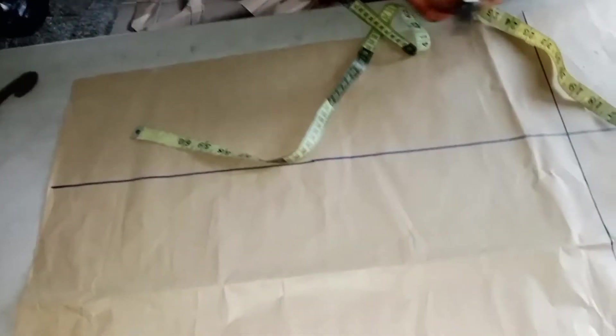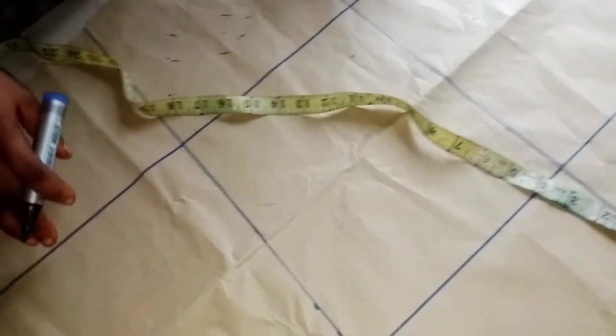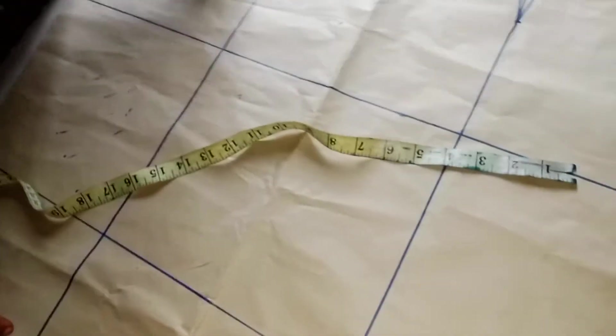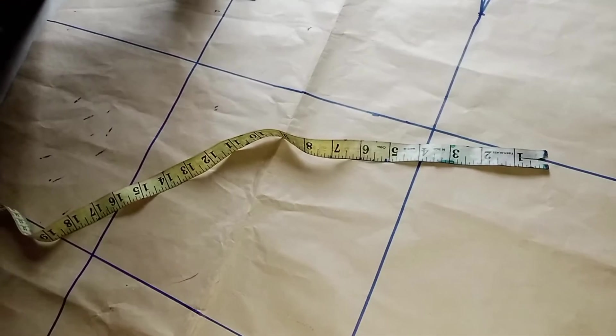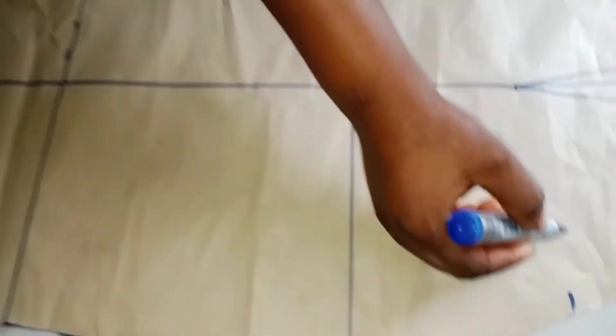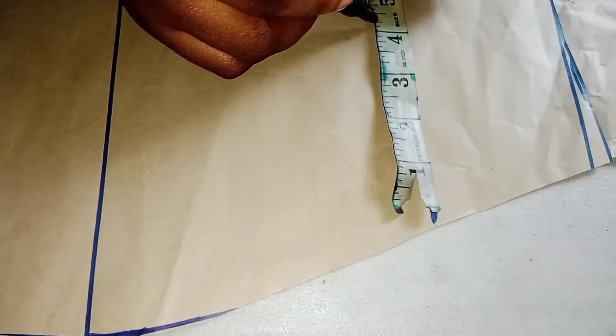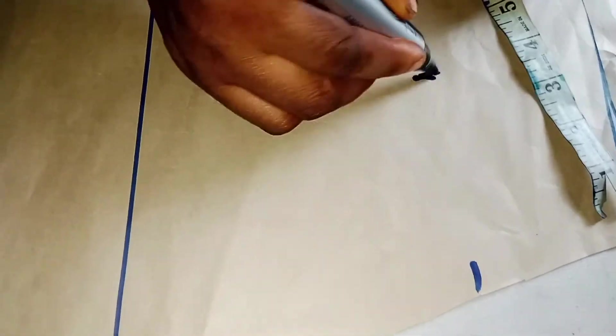This is how I'm going to mark it. If you don't know how to cut a basic bodice gown, please go to my channel. There'll be a link on it so you can watch it. From here, you come in like four inches.